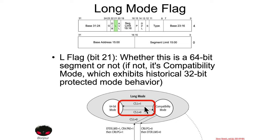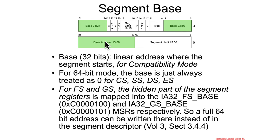An operating system that wants to support both 64-bit and 32-bit code execution is going to have different segment selectors with L set and L not set. The most important bits of a segment descriptor are usually the base address, but the base address is actually only 32 bits, which is a problem since we're dealing with a 64-bit address space. That's because this base address is only actually used in compatibility mode. In 64-bit mode, the change to the architecture is that for CS, SS, DS, and ES, the base is always hard-coded to 0.